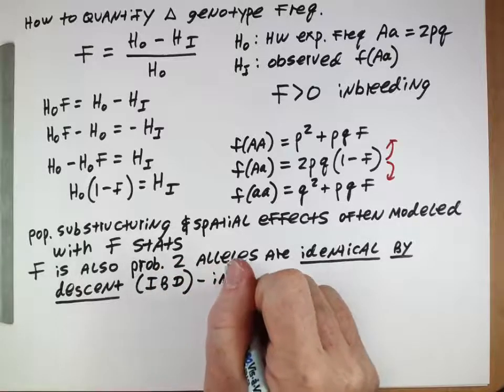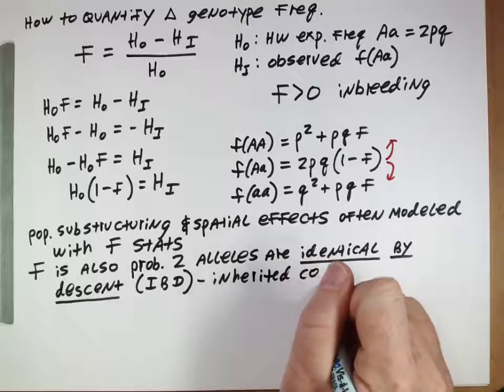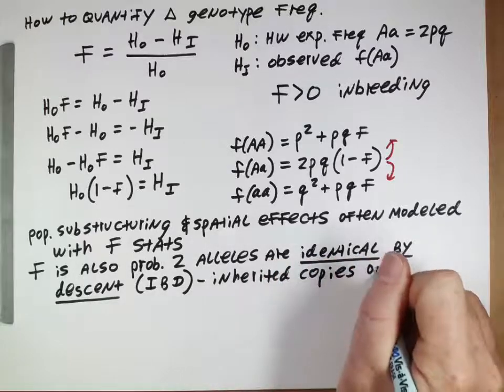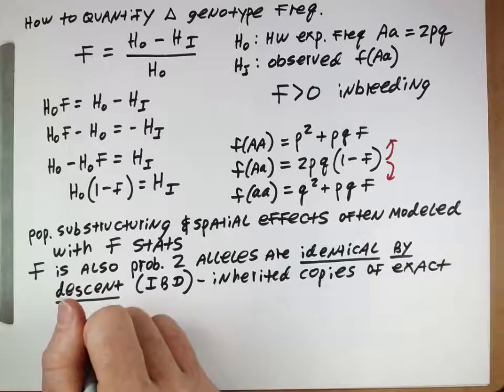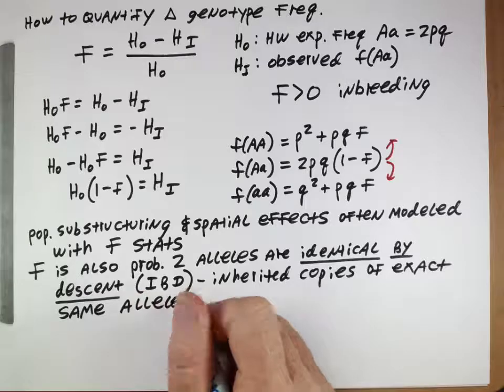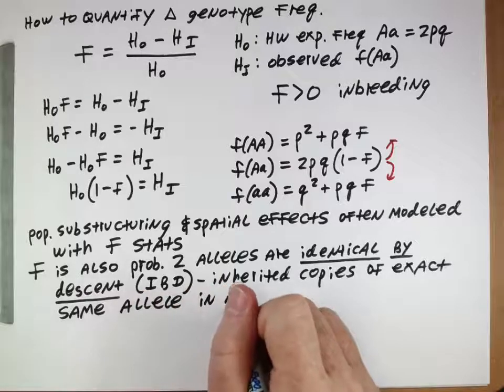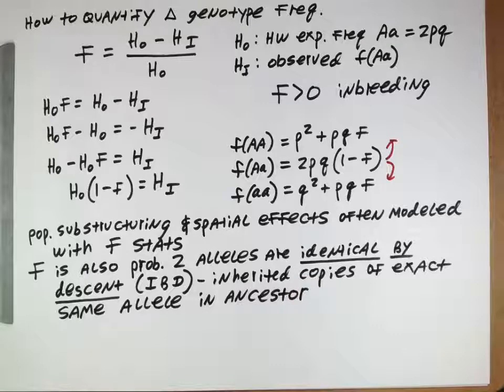What identical by descent means is they are inherited copies of the exact same allele. From the same individual, from the same chromosome, the exact same allele in an ancestor. So when you randomly choose two alleles from a population, F is the probability that those two alleles are exactly the same because they were the same in an ancestor.